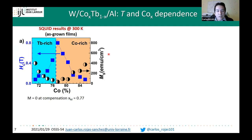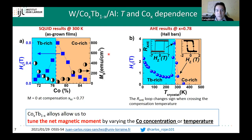If we perform temperature-dependent measurements, we get a similar feature, with the additional effect that the sign of the switching cycle changes when we cross the magnetization compensation point.